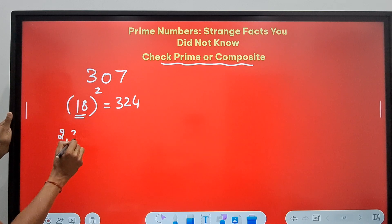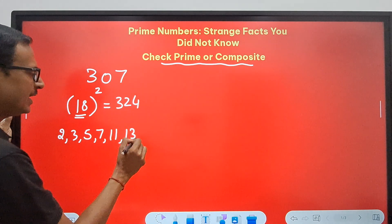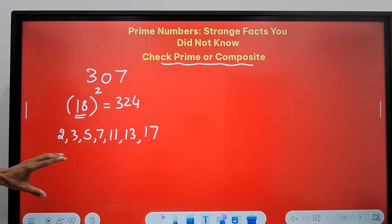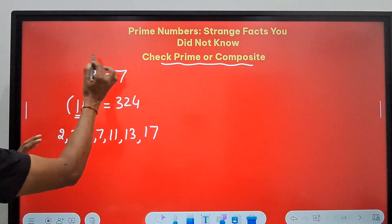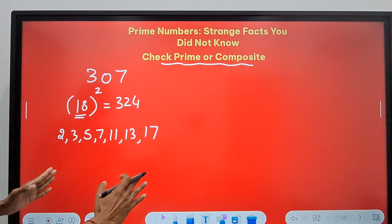Now I'm going to list down all the prime numbers below 18. So these are 2, 3, 5, 7, 11, 13, and 17. These are the prime numbers below 18, and I have to just check whether 307 is divisible by any of these or not.